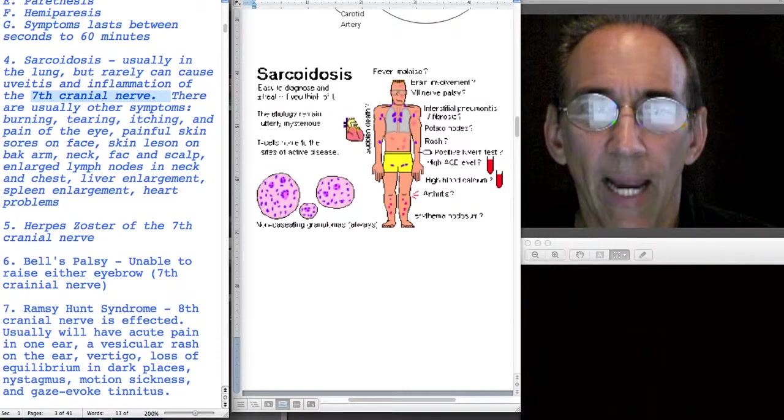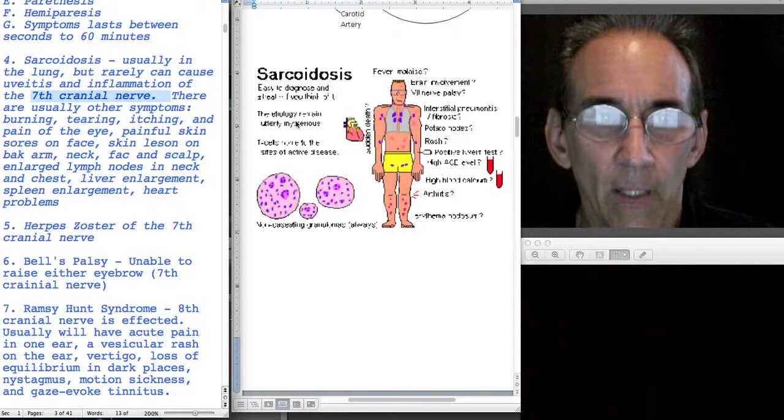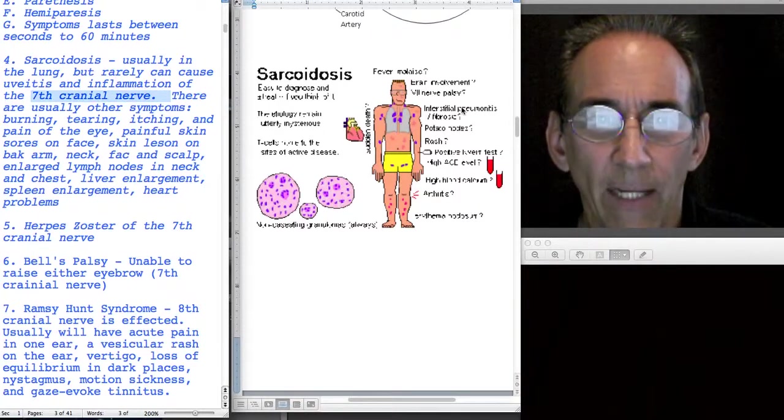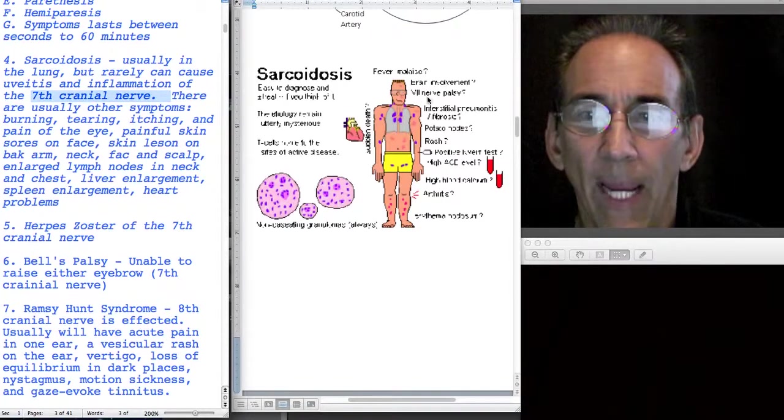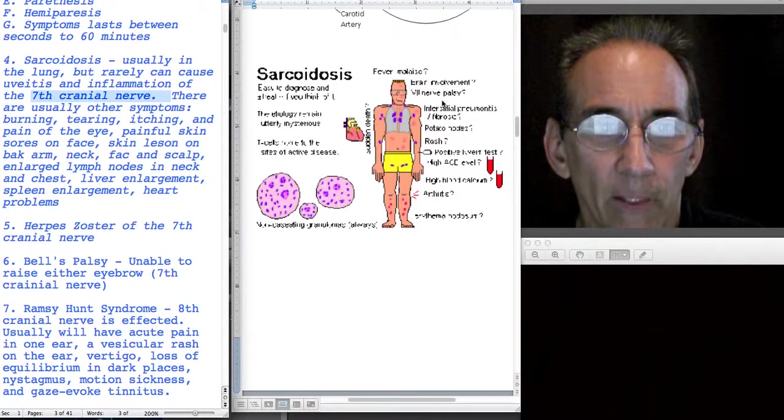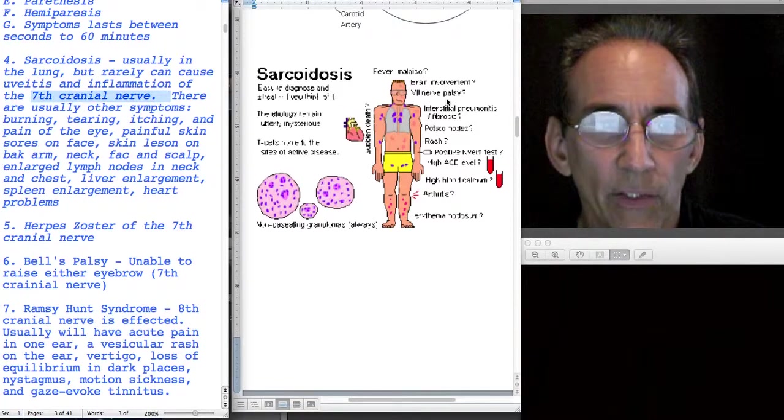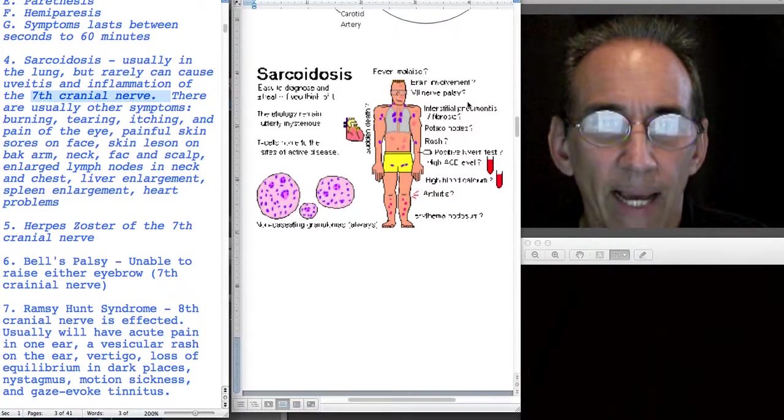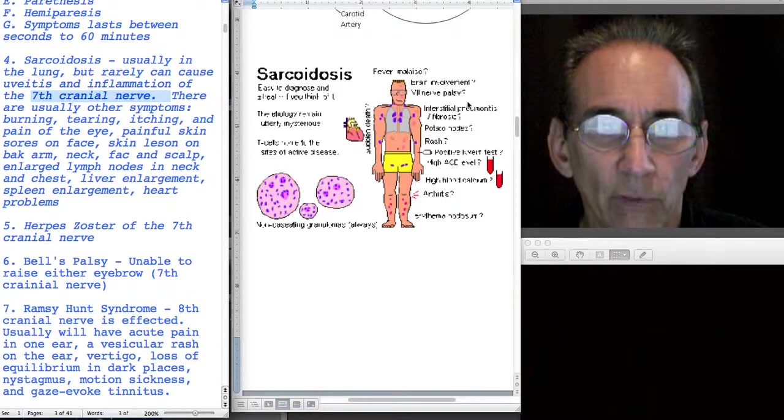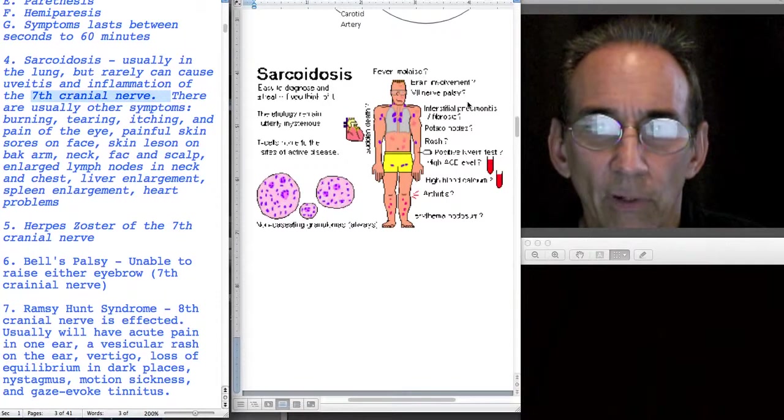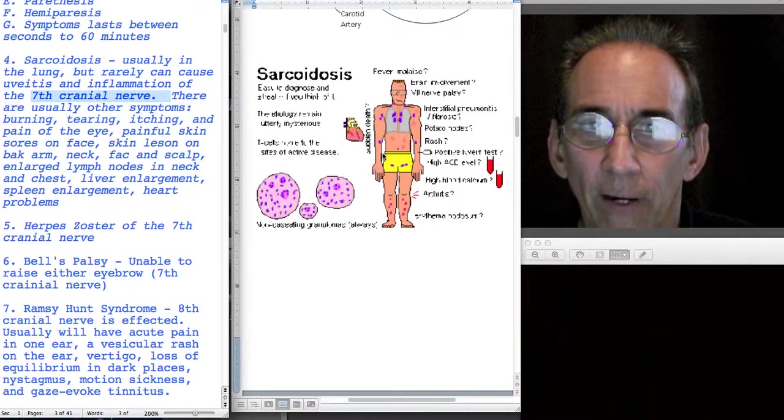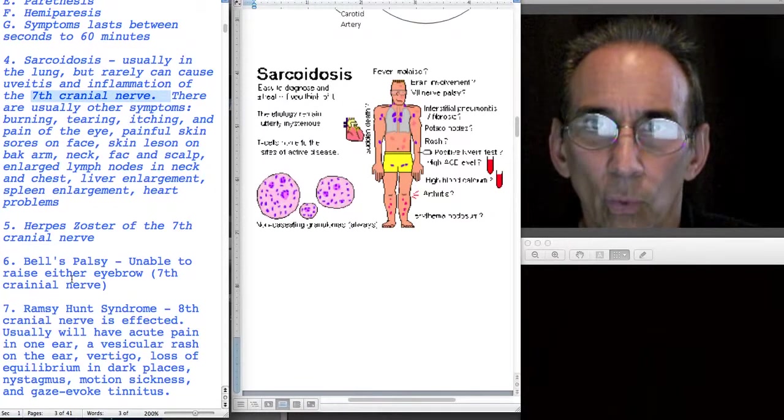They may have burning, tearing, itching around the eyes, painful eyes, painful skin sores. They can have lesions in their back, arm, face or scalp. They can have enlarged lymph nodes in their neck, enlarged lymph nodes in their chest, enlarged liver and enlarged spleen. So a variety of problems with sarcoidosis, therefore it should be fairly easy to rule out.